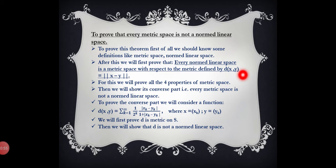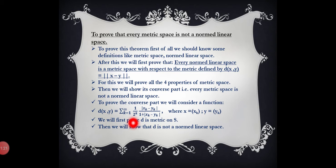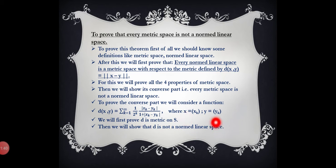After proving the four properties of metric space, we will conclude that every normed linear space is a metric space. Now to show the converse — that every metric space is not a normed linear space — we will consider the function d(x, y) = Σ(k=1 to ∞) [1/2^k · |x_k − y_k| / (1 + |x_k − y_k|)], where x = (x_k) and y = (y_k). We will first prove that d is a metric on s, and then prove that d does not define a normed linear space, concluding that every metric space need not be a normed linear space.